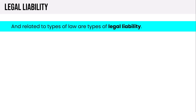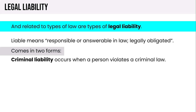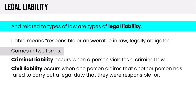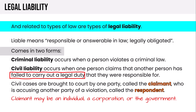Related to types of law are types of legal liability. Liable means legally responsible or obligated — either to do something or not do something. There are two types you want to know: criminal liability, which occurs when a person violates a criminal law, and civil liability, which occurs when one party — the claimant — claims another party — the respondent — has failed to carry out a legal duty. The claimant or respondent may be an individual, a corporation, or the government.